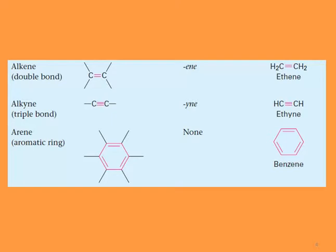Another group is arenes, or aromatic rings. As you can see, we have a ring with six members, and the bonding alternates: double bond, single bond, double bond, single bond, double bond, single bond. An example is benzene, shown on the right-hand side of the picture.